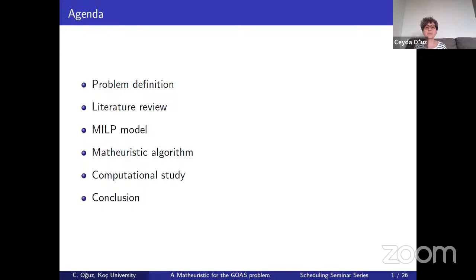Today I will present what our problem is, and I will very briefly go through the literature. During this definition and the literature, I will try to differentiate order acceptance and order rejection, as Mike asked me earlier. Then I will present an MILP model that we developed for our problem, go through the details of the math heuristic algorithm, and after talking about the computational studies, I will conclude my talk.